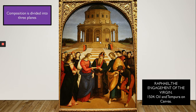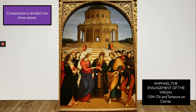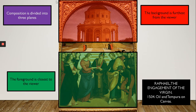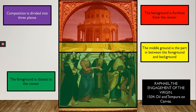A composition can be divided into three planes. We call the entire image our picture plane, and that picture plane can be divided into three sections. The foreground — where all our people are standing — is the closest to the viewer. The background — the building at the back — is furthest from the viewer. The mid-ground is the section in the middle, in between the background and the foreground. You can refer to these as the front, middle, or back of the picture plane.